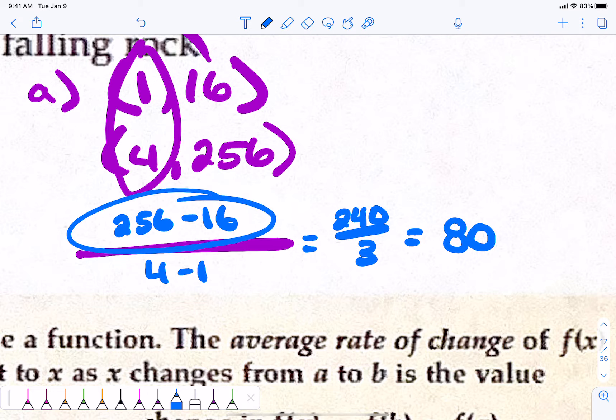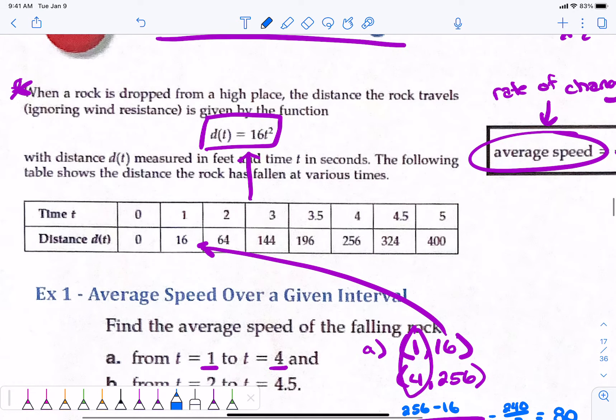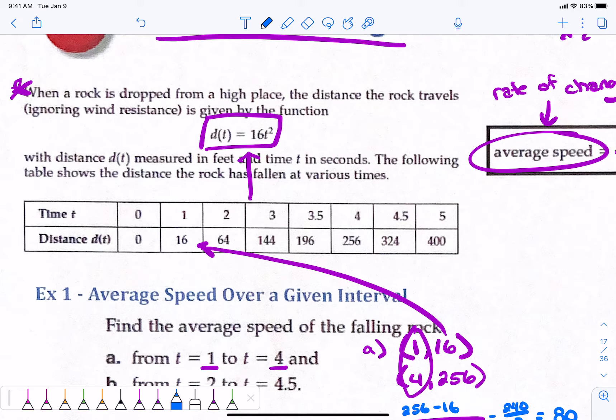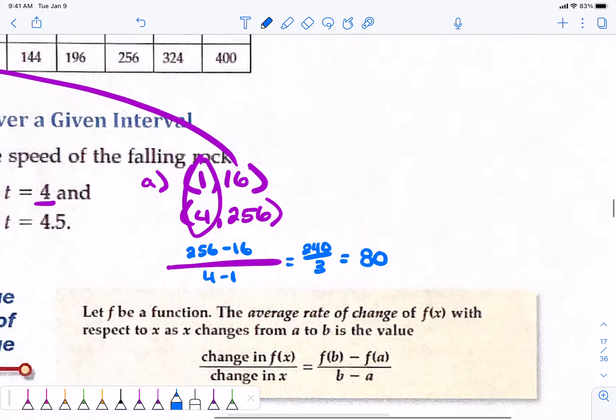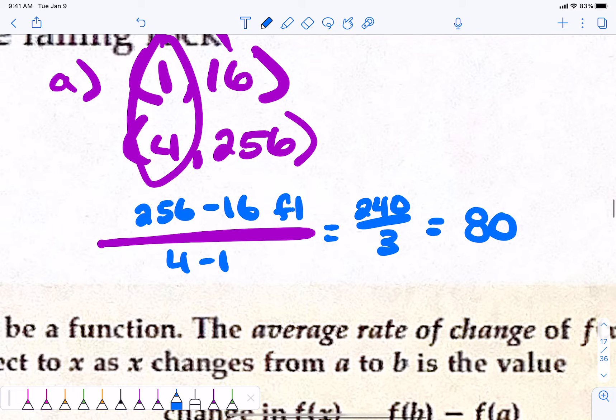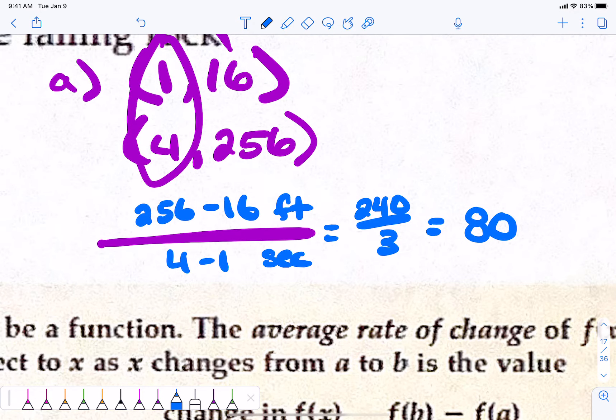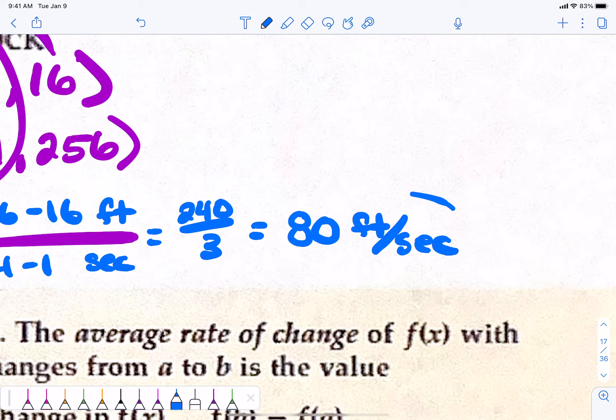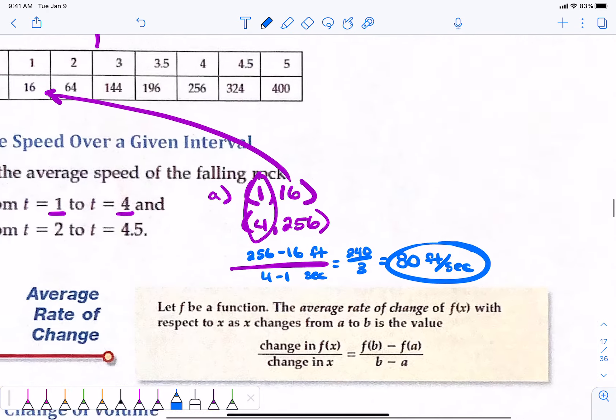What were the 256 and the 16 units? Is it meters or is it feet? It's feet. Where D is measured in feet and time is measured in seconds. So, this is feet on the top and seconds on the bottom. We are going 80 feet per second. On average, I am traveling 80 feet per second from one to four seconds.